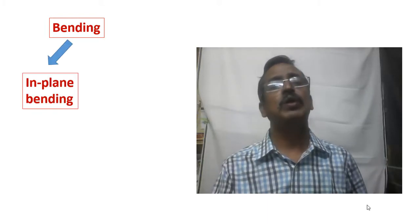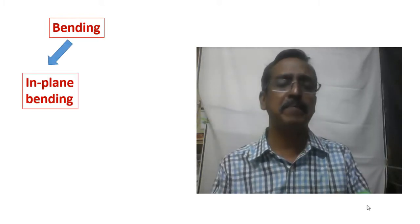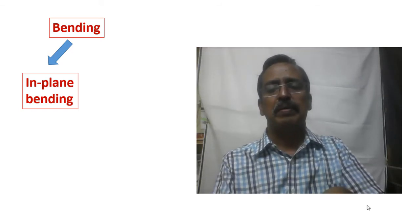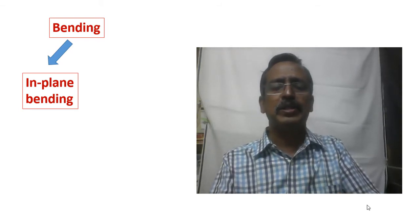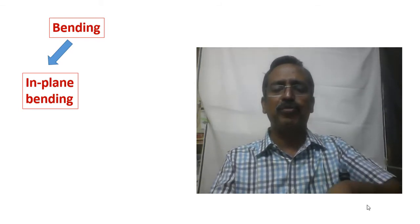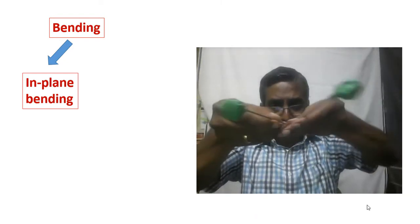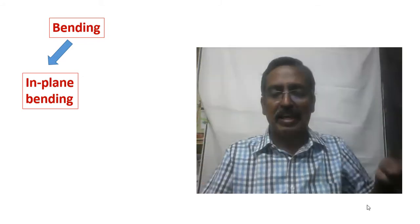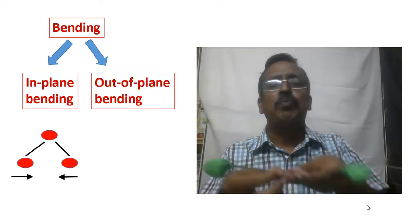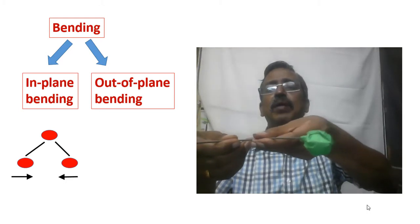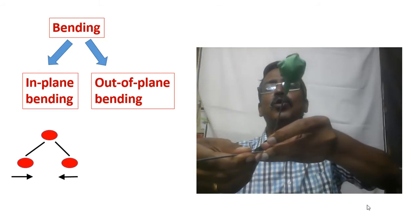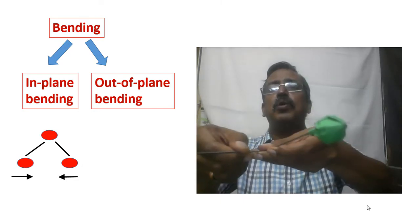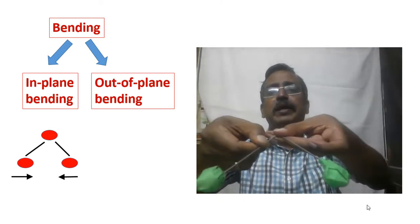Next we have bending. In bending, there are two types: in-plane bending, in which all the bonds are in the same plane during bending, and out-of-plane bending, in which all the bonds are not in the same plane. During out-of-plane bending, one bond may go up while the other goes down, or both bonds may go up, or both bonds may come down.